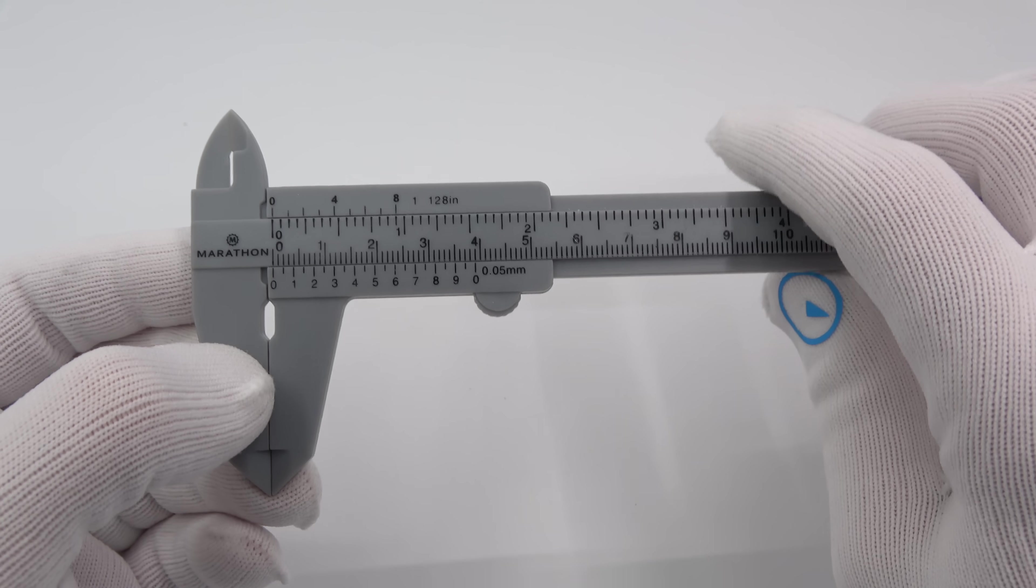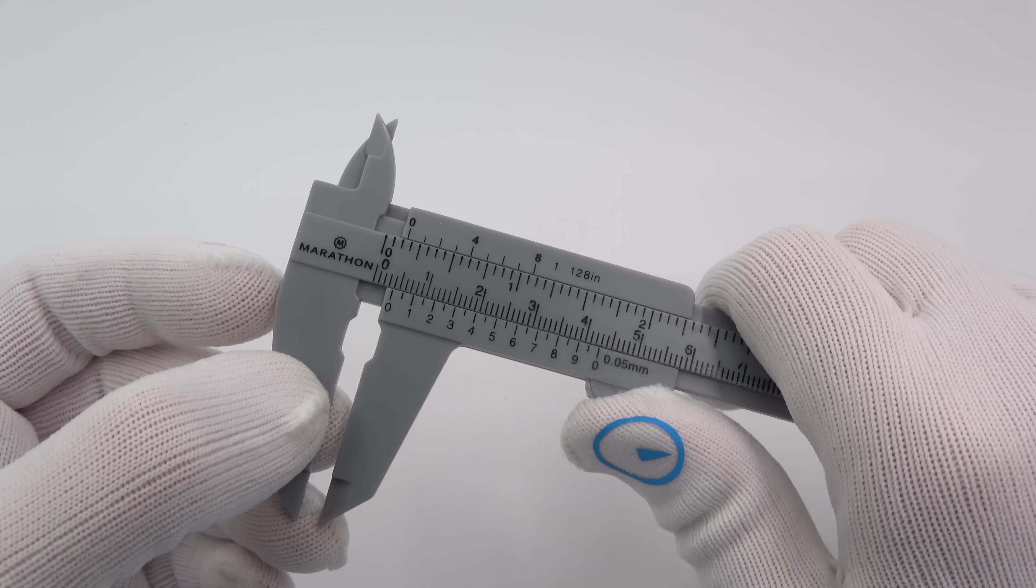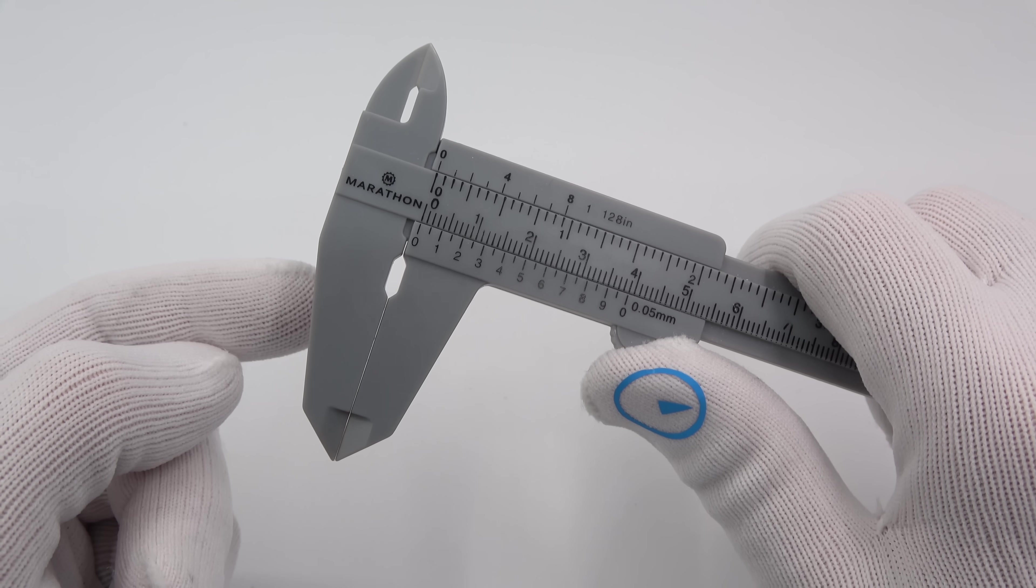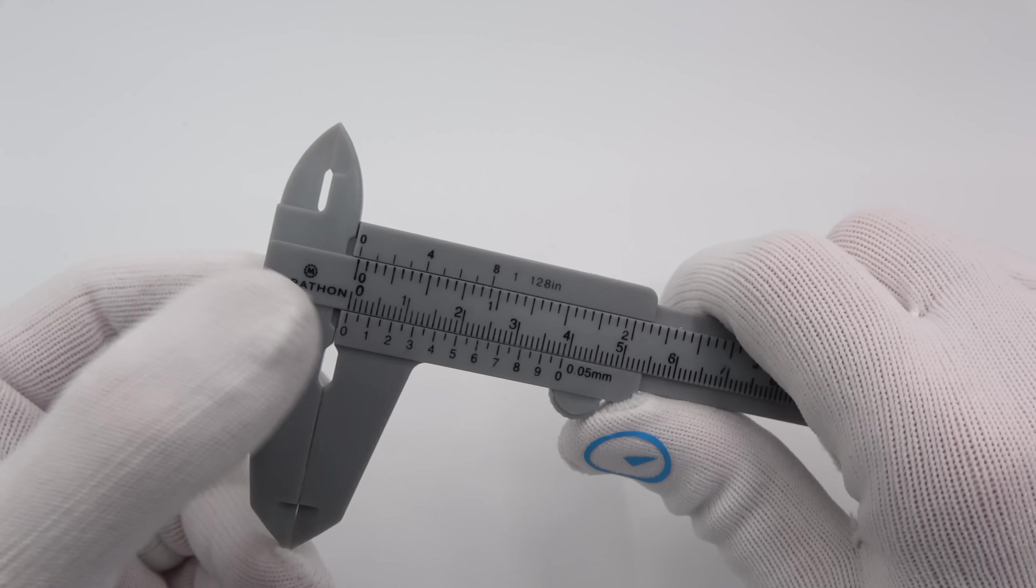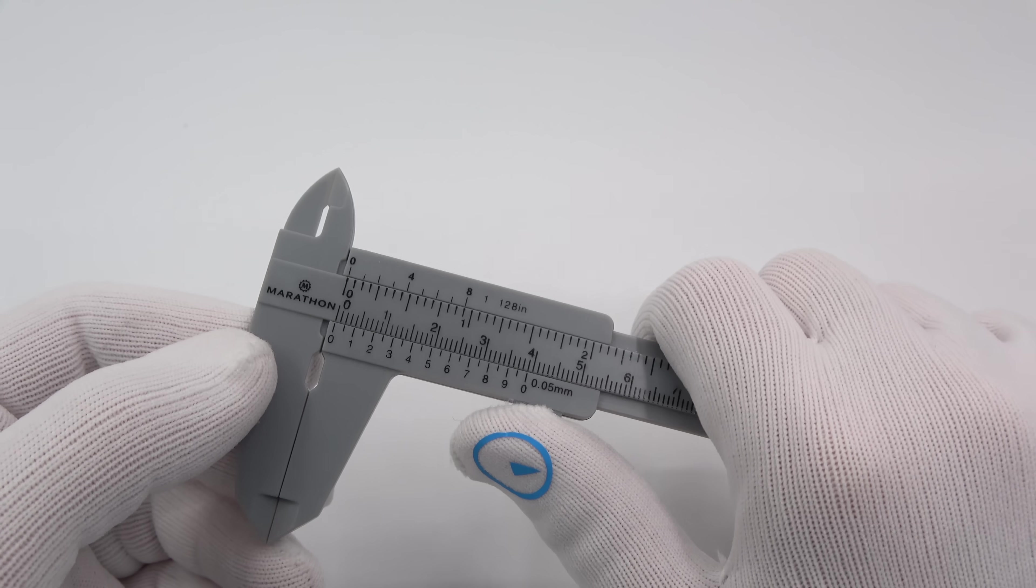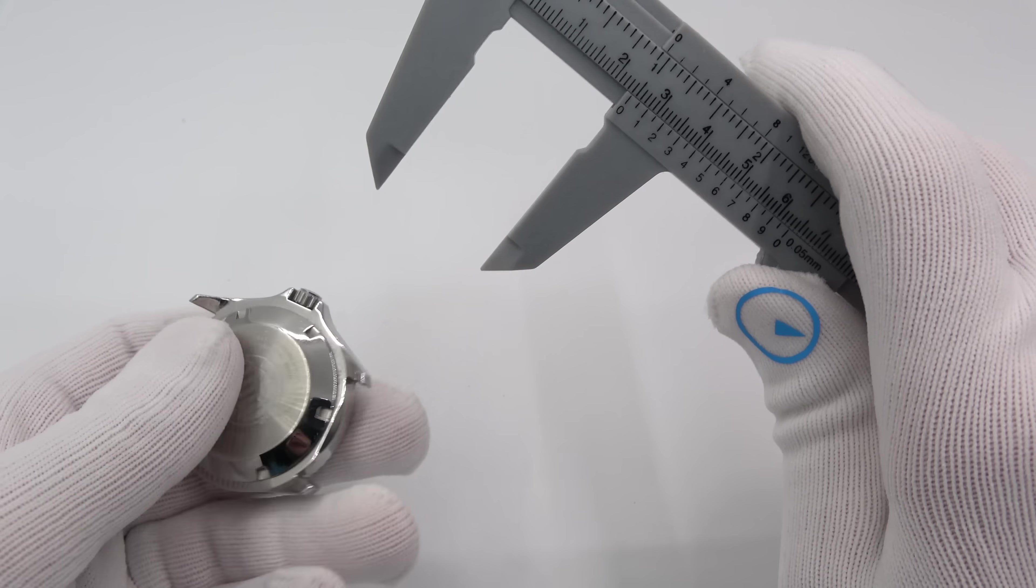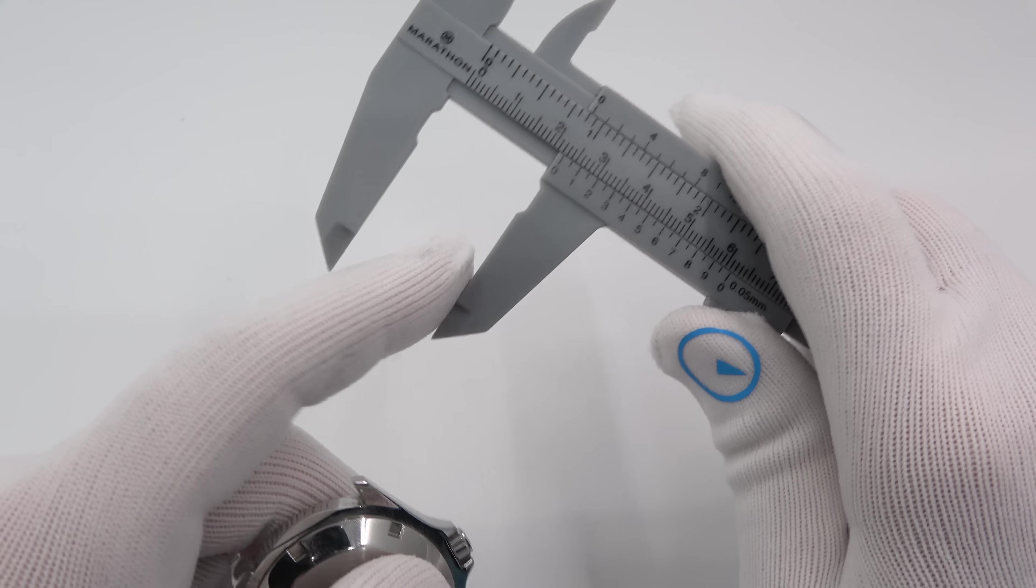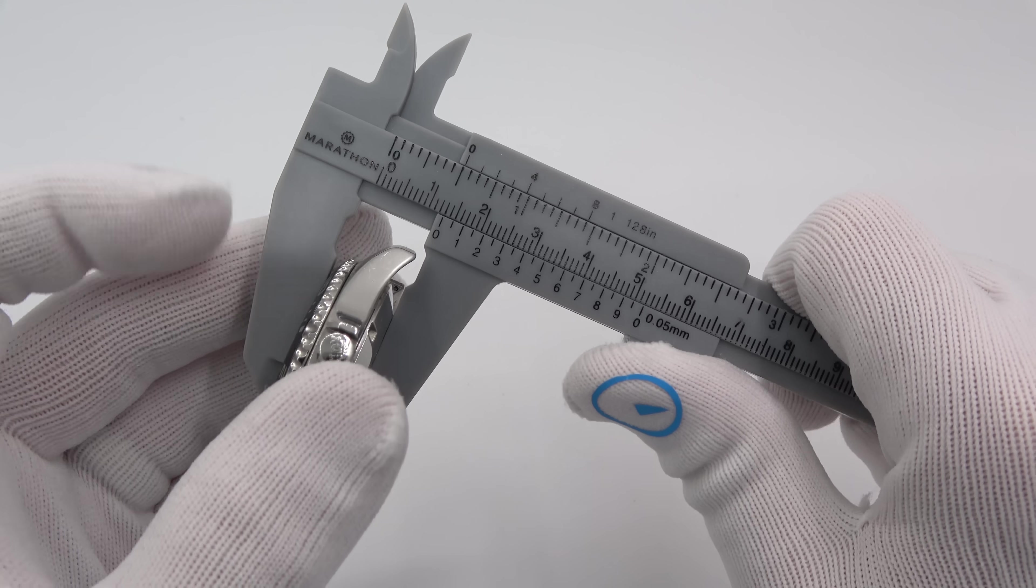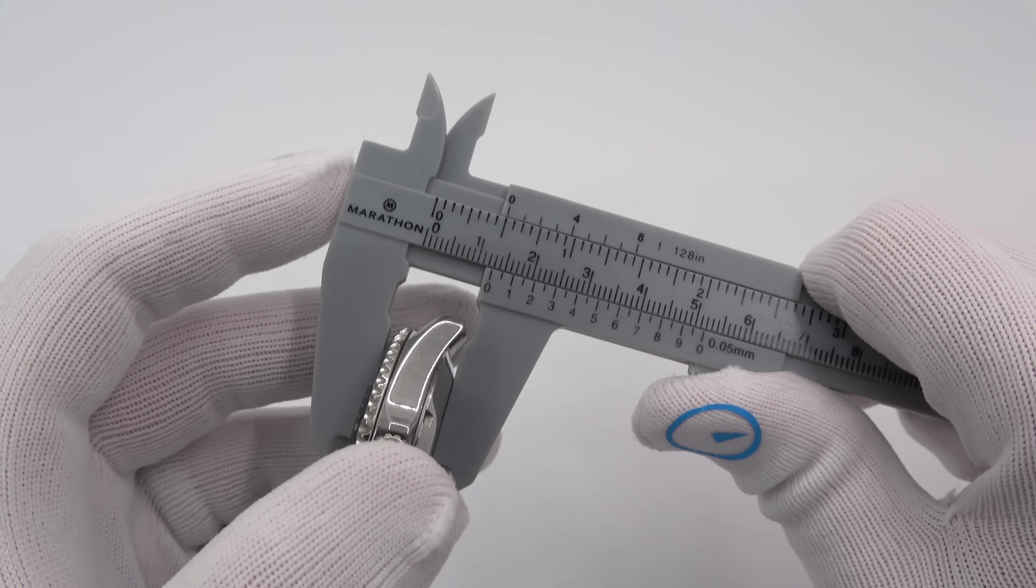So the first thing that people maybe don't fully understand is that this caliper can measure things one, two, three, four different methods. So let's go over that and then we'll discuss how to read them.